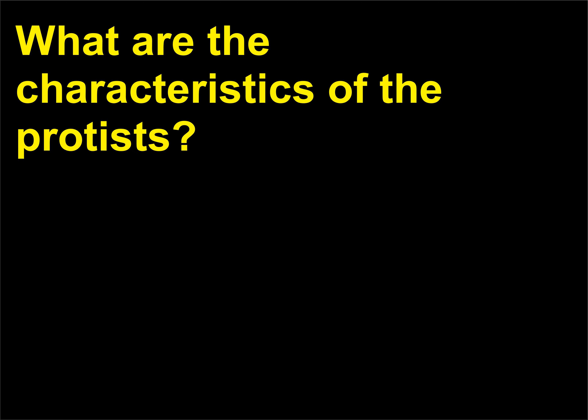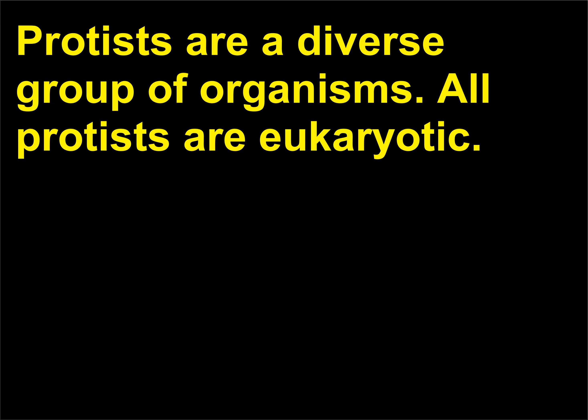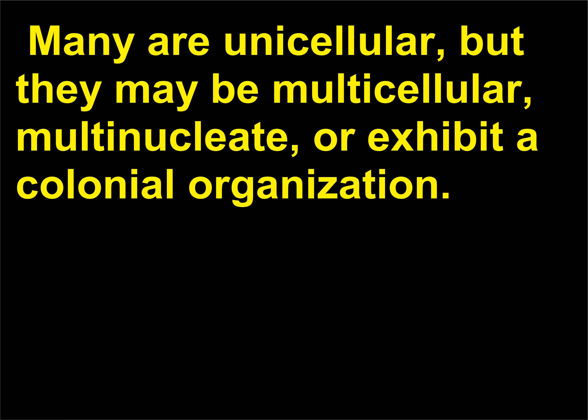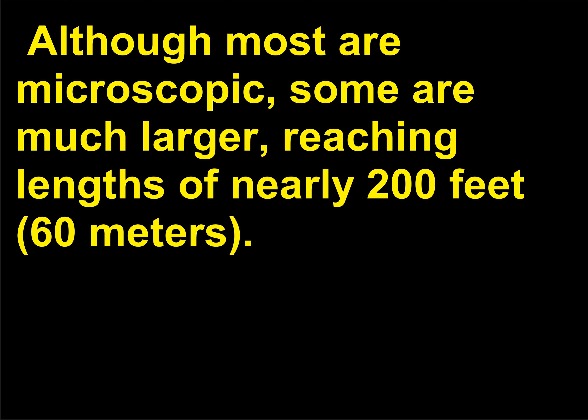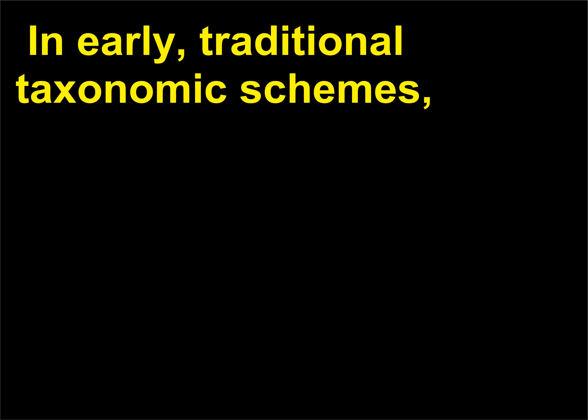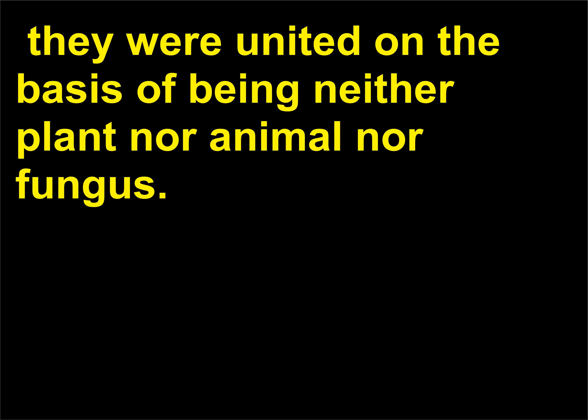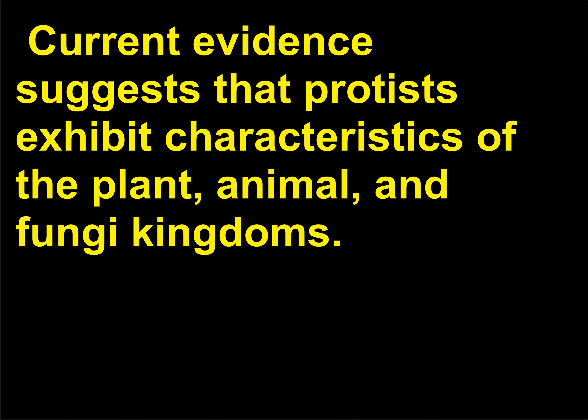What are the characteristics of the protists? Protists are a diverse group of organisms. All protists are eukaryotic. Many are unicellular, but they may be multicellular, multinucleate, or exhibit a colonial organization. Although most are microscopic, some are much larger, reaching lengths of nearly 200 feet, 60 meters. They were united on the basis of being neither plant nor animal nor fungus. Current evidence suggests that protists exhibit characteristics of the plant, animal, and fungi kingdoms.